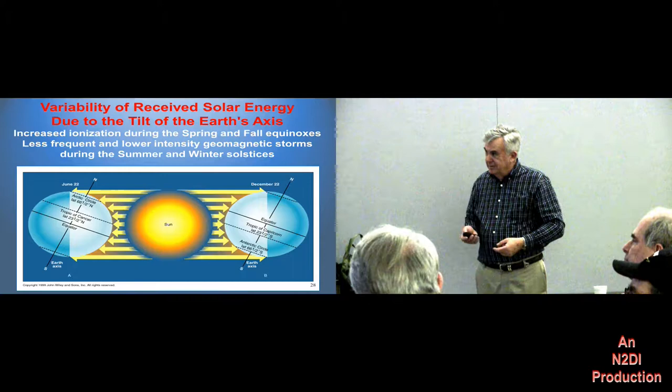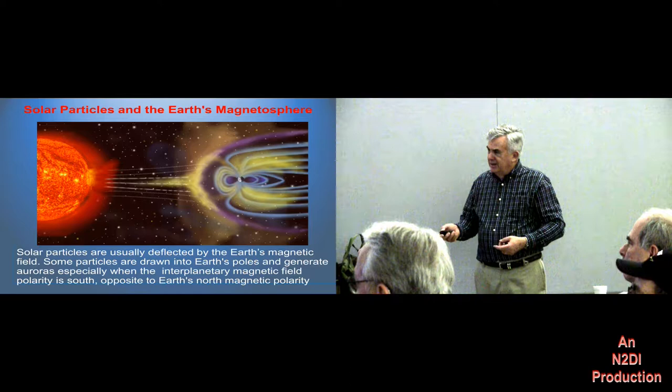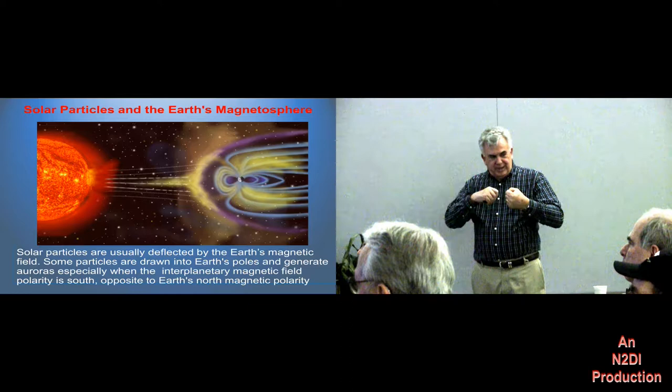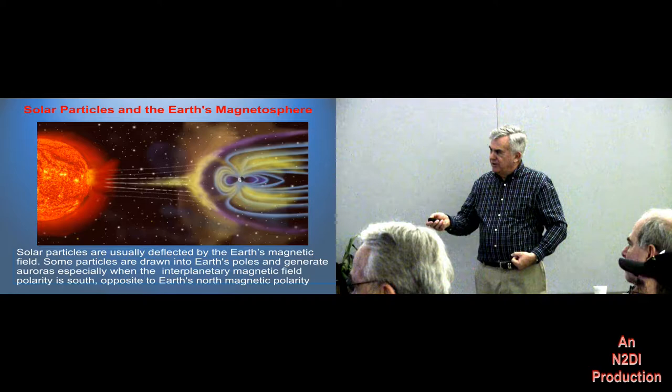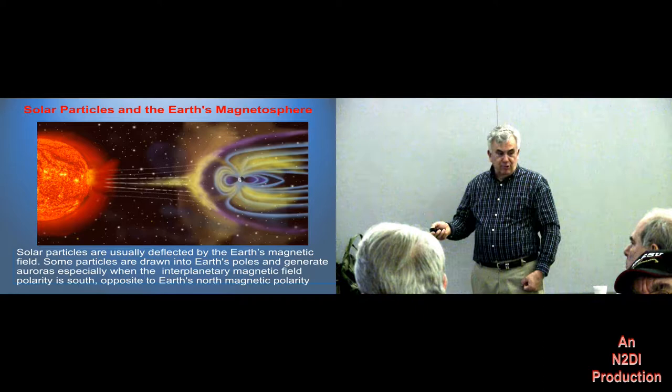So when some of these particles are coming from the sun, if it's like the magnets in elementary school oriented the same way, those particles get pushed away from the earth. But when it's oriented the other way, it gets sucked in, and we have things like aurora and dead bands and that kind of thing.